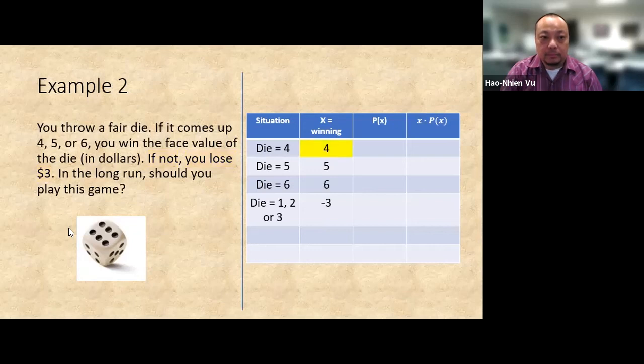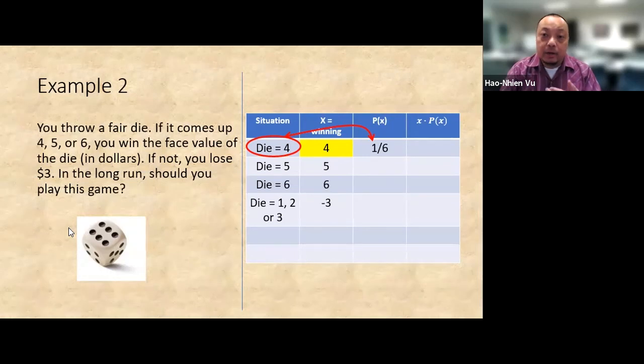Now the probabilities. What's the probability of x equals four? And this is where the first column helps, right? X equals four when the die rolls a four, and that probability is one out of six. So we get that probability in there. Now hit pause and finish this problem.